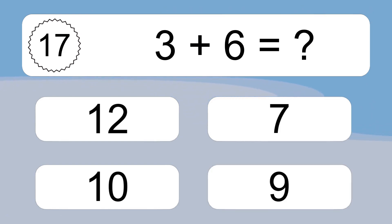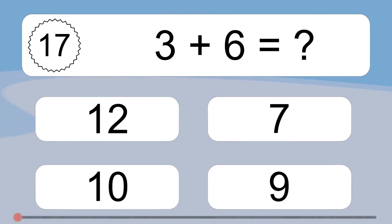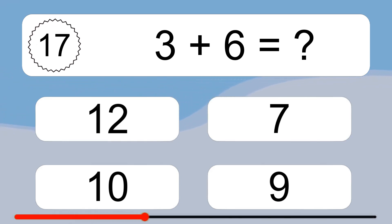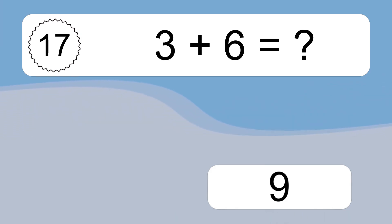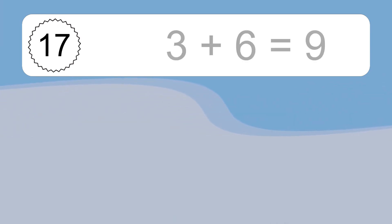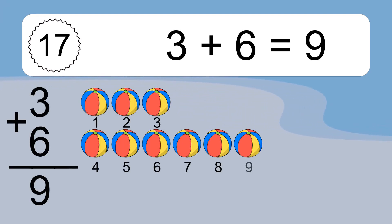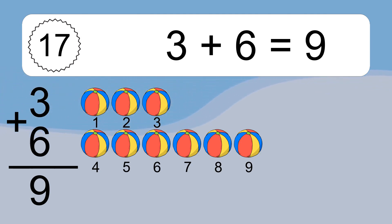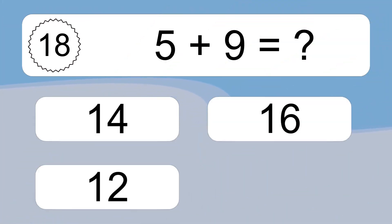3 plus 6 equals what? 3 plus 6 equals 9. Let's count it. 1, 2, 3, 4, 5, 6, 7, 8, 9.